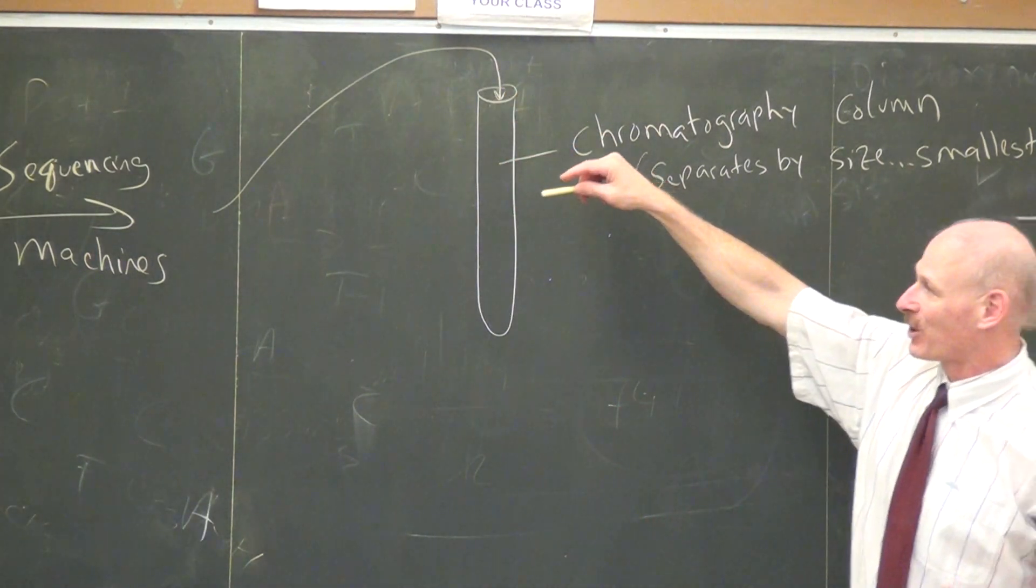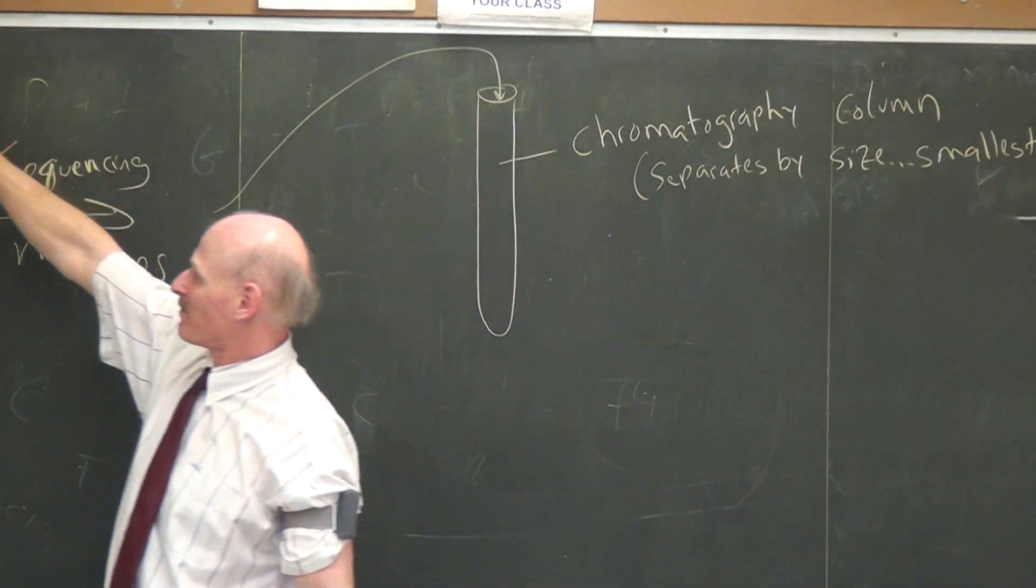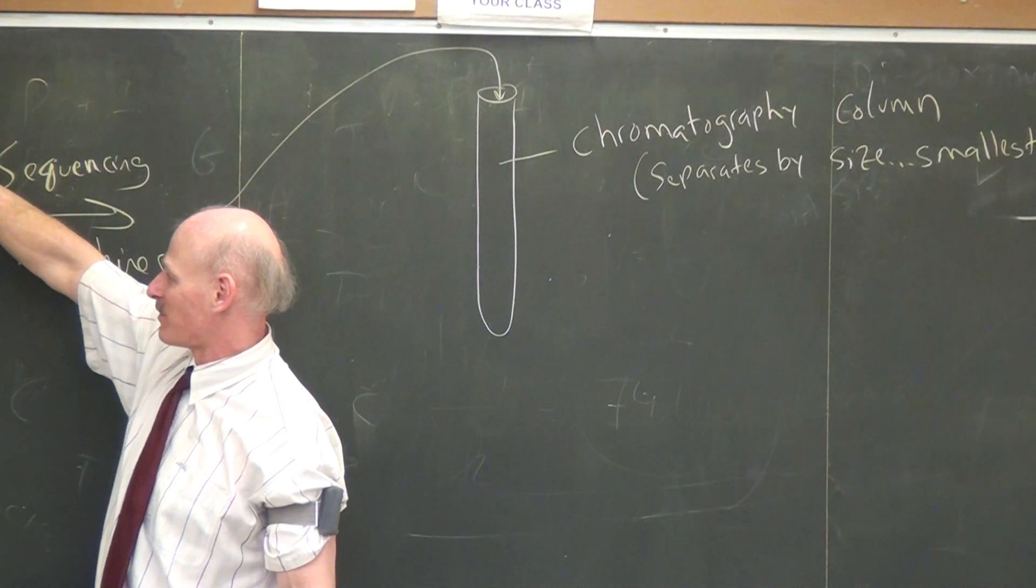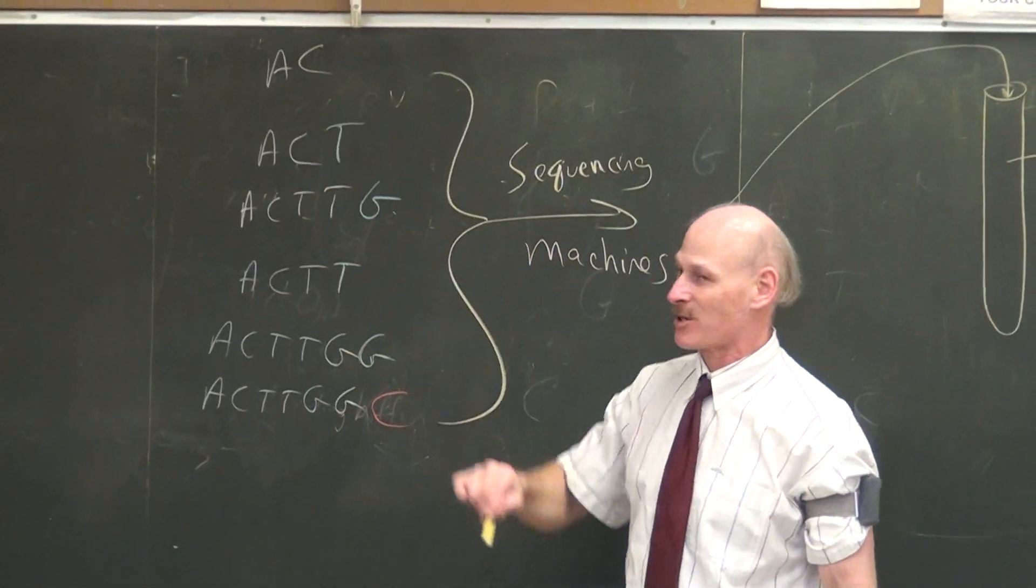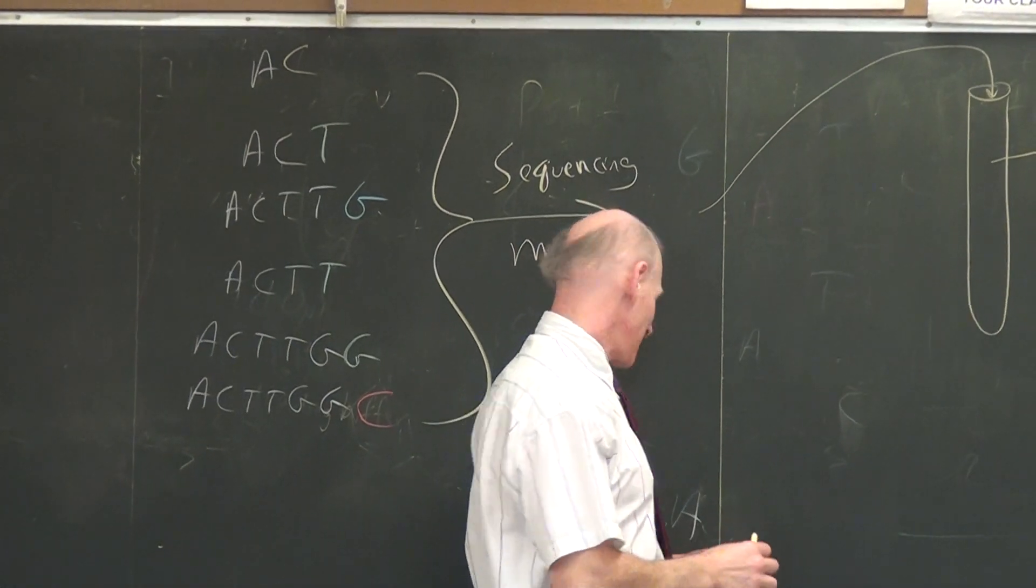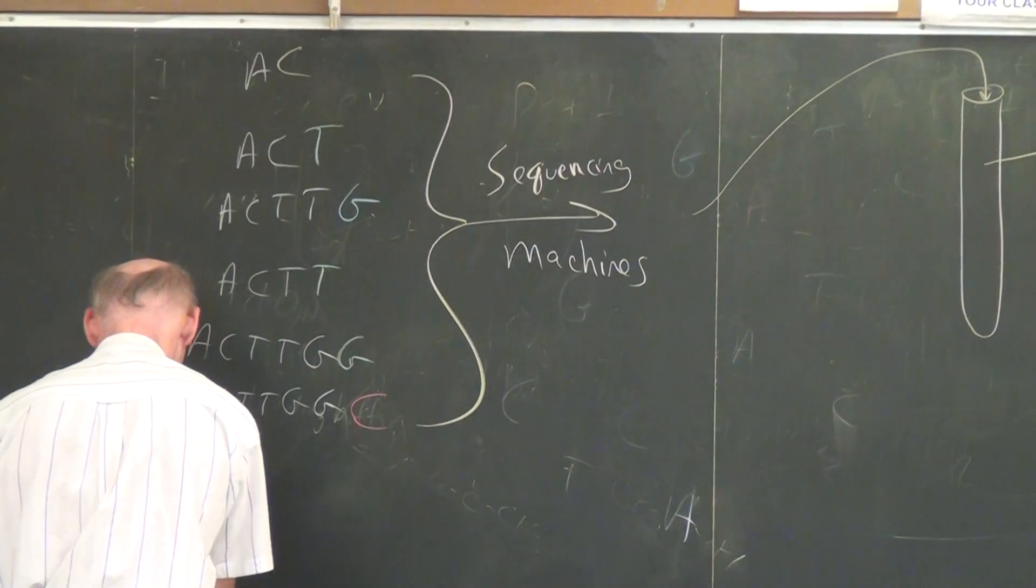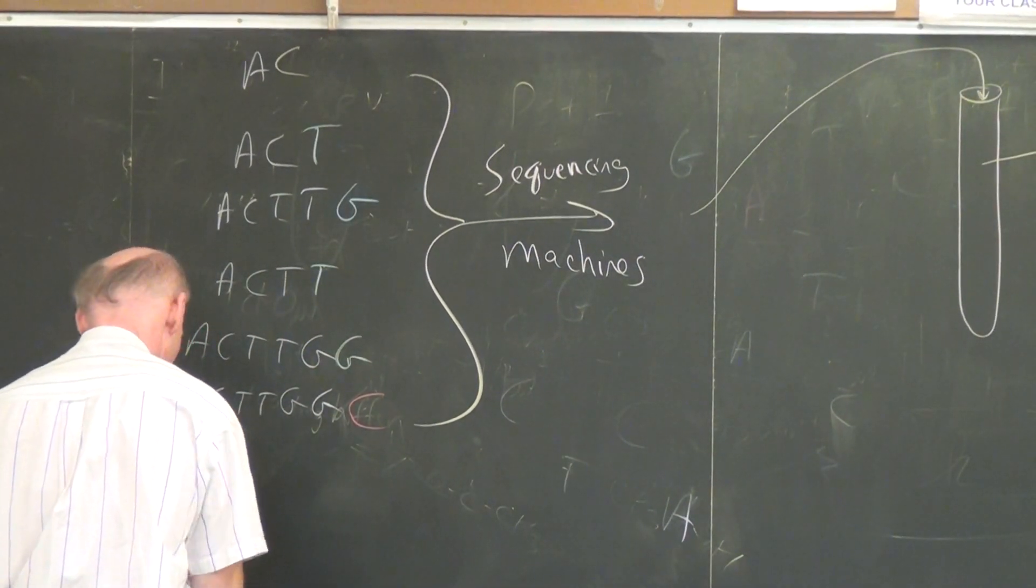That's what these things do. You need to feed your collection of strands in there. And then as they work through, work their way through, the smallest ones can migrate fastest, and the second smallest ones a little slightly slower, and the next one slightly slower yet. So they come out of this machine in their correct order, so to speak.